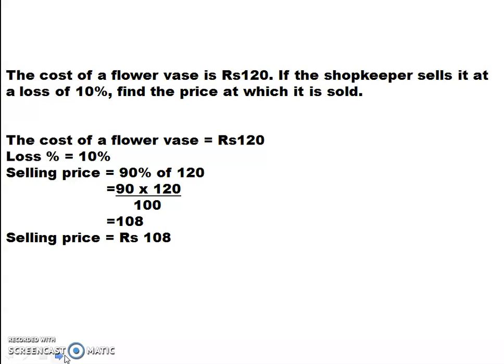It is percentage decrease. So here, selling price is equal to 90% of 120. Why 90%? Because it is a loss of 10%, so from 100% I subtract 10%, giving 90%. Selling price equals 90% of cost price, that is 90/100 × 120. The selling price of the flower vase is Rs. 108.